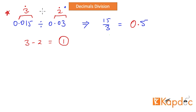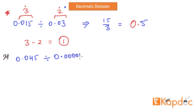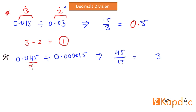The key point in decimal division is to subtract the number of decimal digits in the divisor from those in the dividend. But there can be a little confusion, so let me show that with Example 2. My dividend is 0.045 and my divisor is 0.000015 — that's four zeros and then 15. First, 45 divided by 15 equals 3. Now we count: the dividend has three decimal digits and the divisor has six decimal digits.